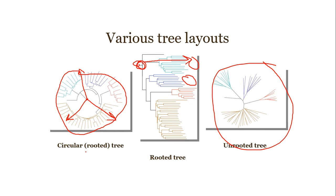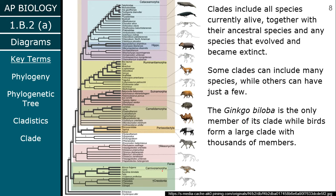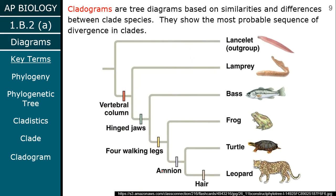We're typically going to use circular rooted trees and regular rooted trees. Clades are basically any group of organisms that all have one common ancestor, including anything currently alive as well as anything no longer alive. Some clades are small and some are big. For example, all birds form one gigantic clade of 10,000-plus species, and within that clade of birds there are other clades — like clades of songbirds.